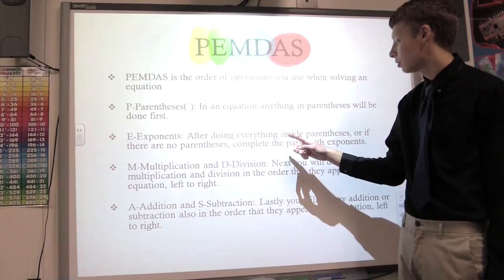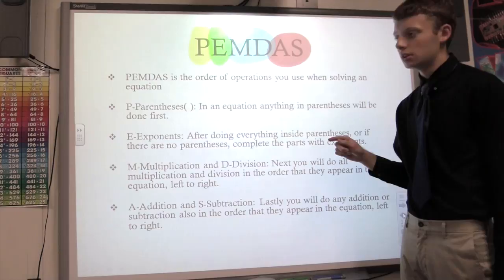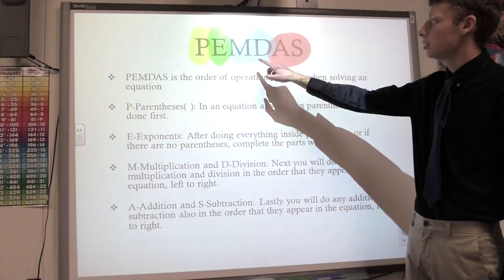The next letter is the E, highlighted in green. That's the exponents. After you do everything inside the parentheses, if there are any exponents, you'll do those. You'll raise the number to the exponent and set the value back to the equation.